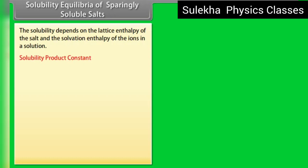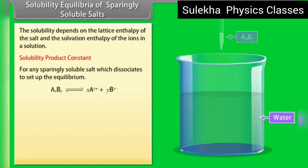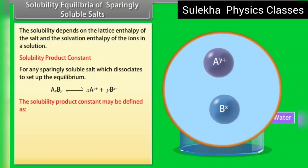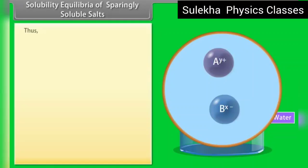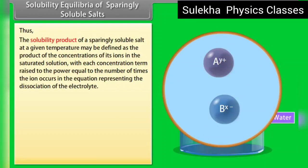Solubility product constant: for any sparingly soluble salt which dissociates to set up equilibrium, the solubility product constant Ksp may be defined as [A^(y+)]^x × [B^(x−)]^y, where A^(y+) and B^(x−) denote the positive and negative ions respectively, and x and y represent the number of these ions in the formula of the electrolyte. The solubility product is the product of the concentrations of its ions in the saturated solution, with each concentration term raised to the power equal to the number of times the ion occurs in the dissociation equation.